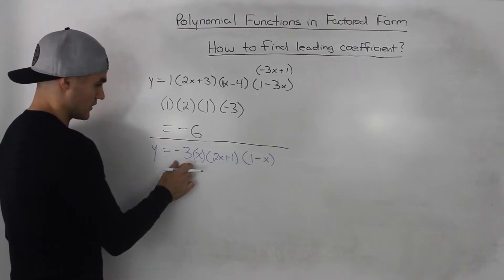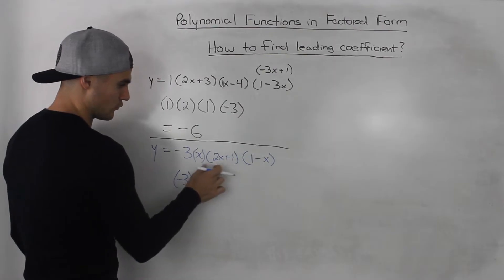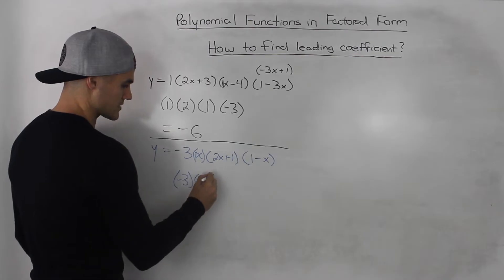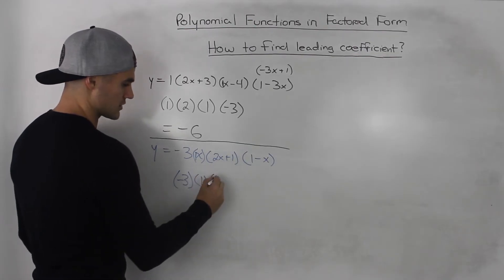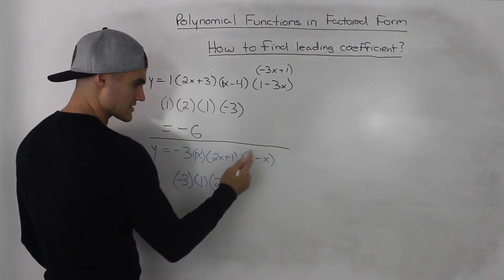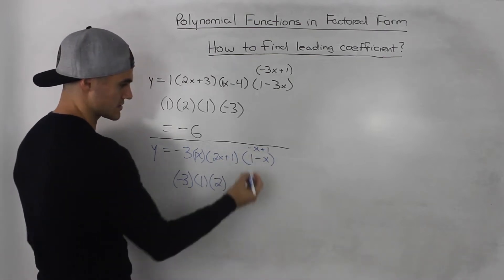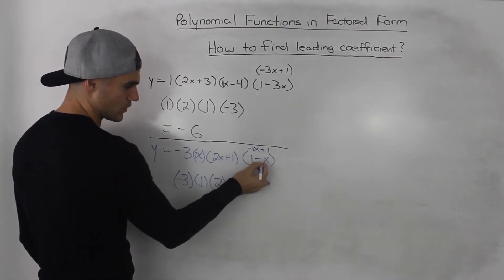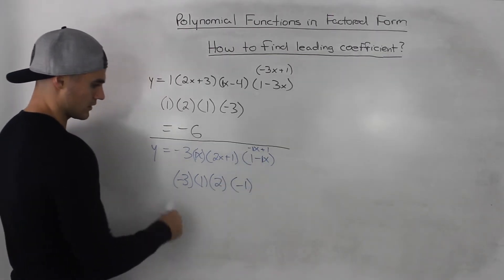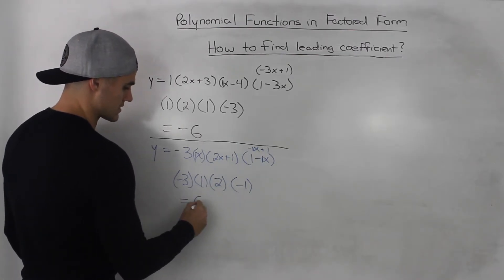We take the number that's always in front, so in this case there's a negative 3. And then multiply it by the leading coefficient of each bracket. The leading coefficient of the x bracket has a 1 in front of the x, so that's 1. The leading coefficient of 2x plus 1 is 2. And for 1 minus x — if we rewrite it as negative x plus 1, the leading coefficient is negative 1. Multiplying all these: negative 3 times 1 times 2 times negative 1 gives us positive 6.